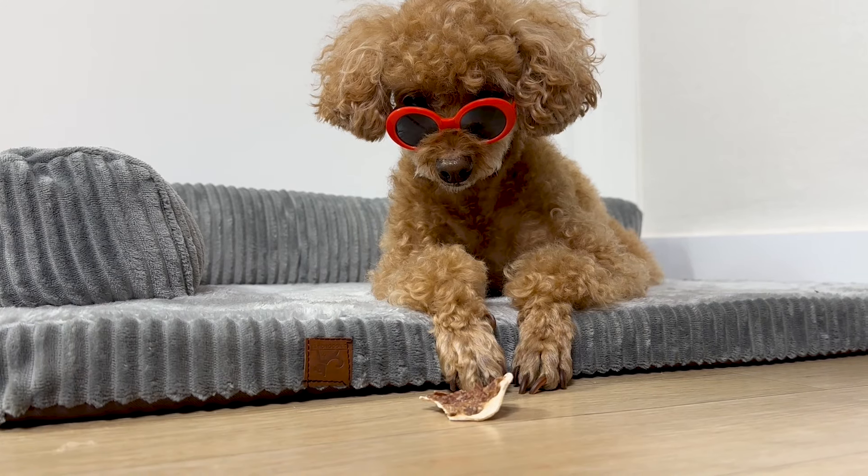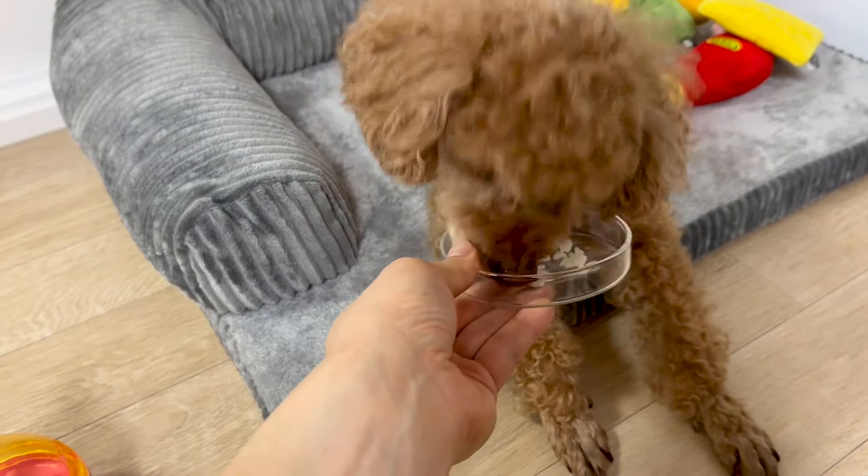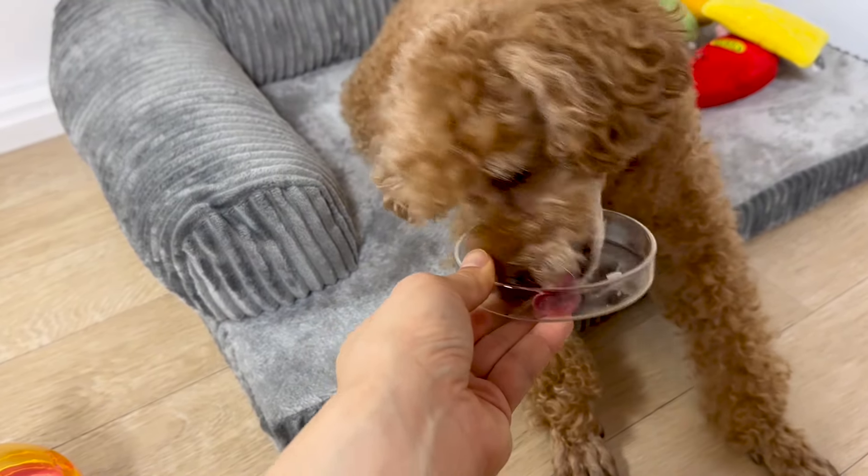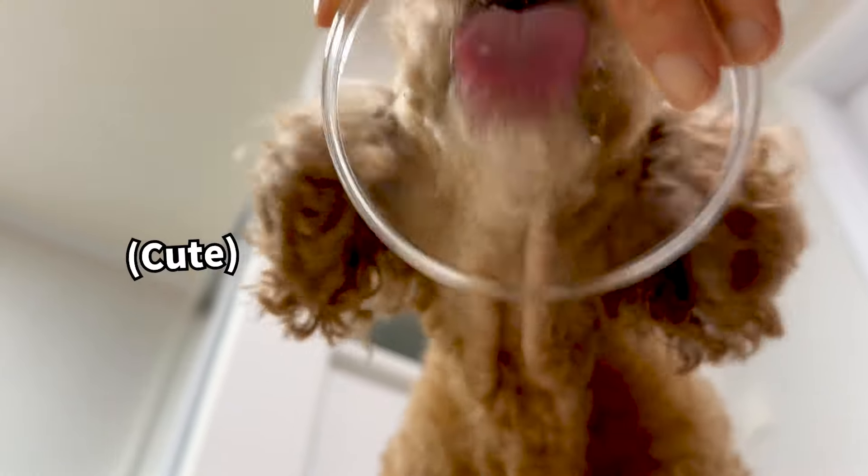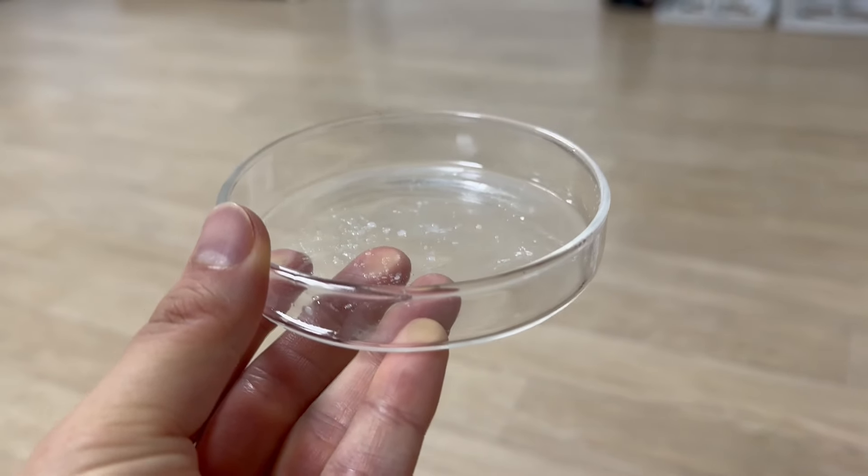However, he wasn't too fond of this method, so I placed a grain of rice on the plate to collect the saliva directly. And it worked perfectly. Thus, I successfully collected a good amount of saliva from Prince Buddy.